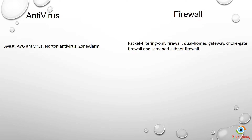For antivirus examples, we have Avast, AVG, Norton, Zona, McAfee, and Kaspersky, among others. For firewall, there are certain suites that give both antivirus and a firewall in one single package — for example, Norton Internet Security and McAfee Internet Security. It's a pretty good deal to go with a suite rather than just a standalone antivirus or a standalone firewall, so you get both best things in one single package.